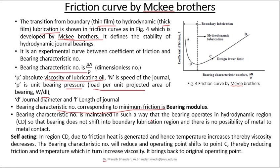The curve has two regions: AB and CD. AB is called boundary lubrication or thin film lubrication, while CD is called the thick film lubrication region. The bearing characteristic number is maintained such that the bearing operates in the hydrodynamic or thick film region, so the bearing does not shift into boundary lubrication and there is no metal to metal contact. In region CD, due to friction, heat is generated and temperature increases, thereby viscosity decreases. The bearing characteristic number reduces and the operating point shifts to point C, reducing friction and temperature, which in turn increases viscosity and brings it back to the original operating point. That is why when the bearing operates in region CD it is self-acting and remains in stable boundary conditions — we always wish the bearing operates in region CD to maintain stability of the lubrication film.